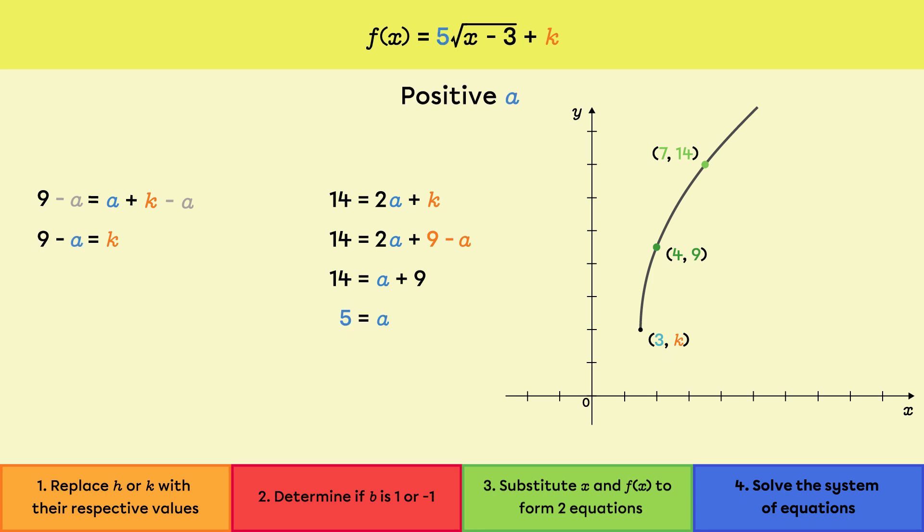Note that the value of parameter a is positive, which is consistent with the fact that the points 4,9 and 7,14 are above the vertex.